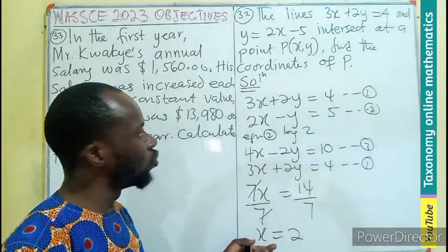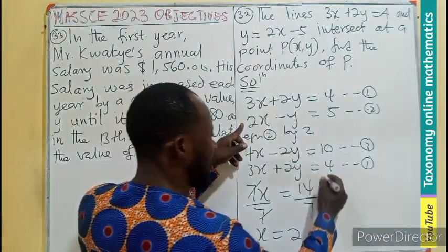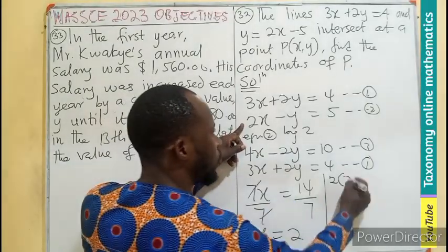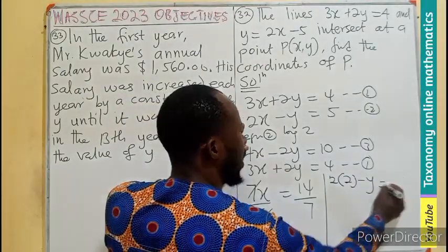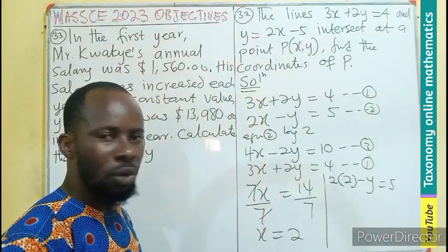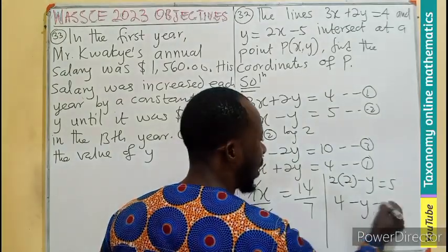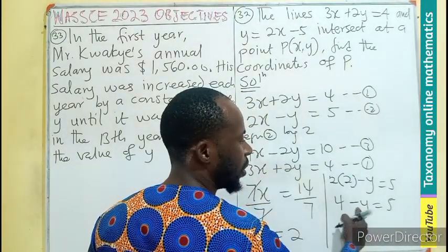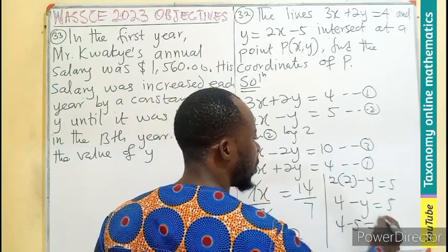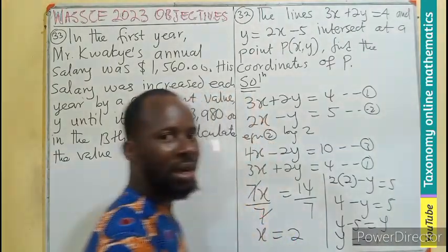What do we do? We substitute back into any of the equations. Picking equation 2, I will be having 2x, which is 2, minus y equals to 5. I am going to multiply to get 4 - y = 5. So 4 - 5 = y. Meaning, y is going to be negative 1.